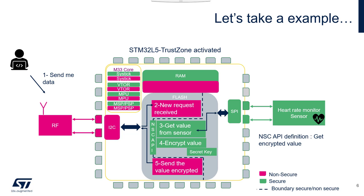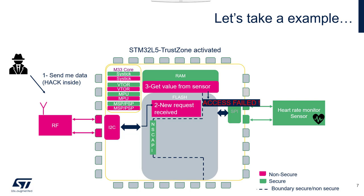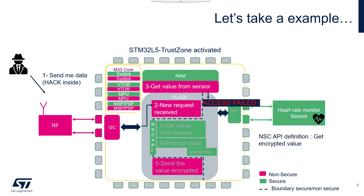Let's come back to our hacker. The hacker sends a hack request. It is handled by our code, which still has the weakness because we haven't discovered it yet. The hacker manages to inject some code. The injected code lands in RAM, but the request handling code is in the non-secure world, so it is injected into the non-secure RAM only. If this injected code tries to access the sensor, it will fail because of the isolation. Code running in non-secure RAM can only access the non-secure world. The only thing the hacker can do is call the 'Get Encrypted Value' API, but this works as normal - they receive an encrypted value and cannot do anything with it.